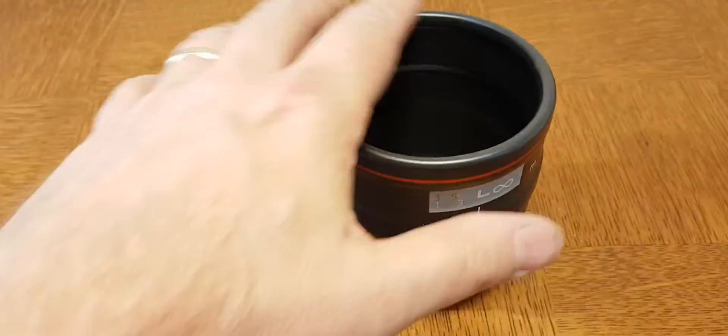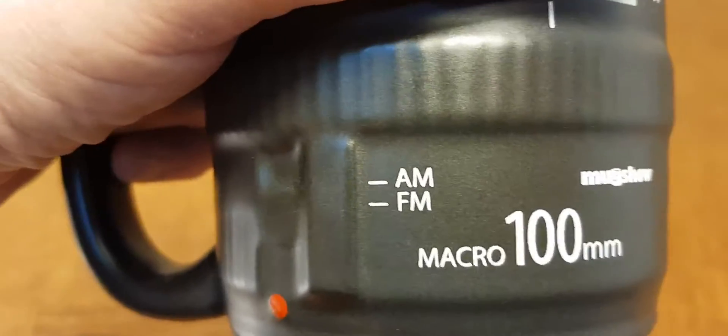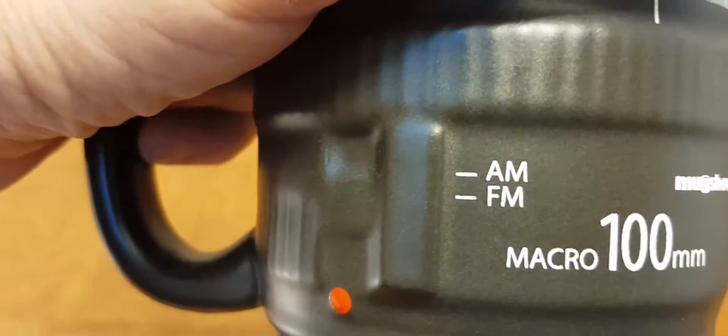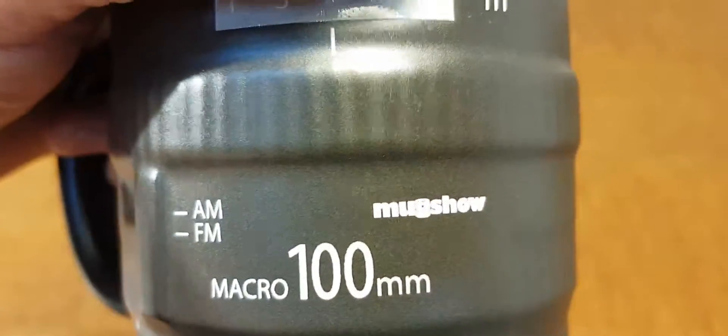I don't... we don't sell mugs anymore. You know why? Because this thing has AM-FM. What kind of camera lens has the words AM-FM on it? Macro 100.